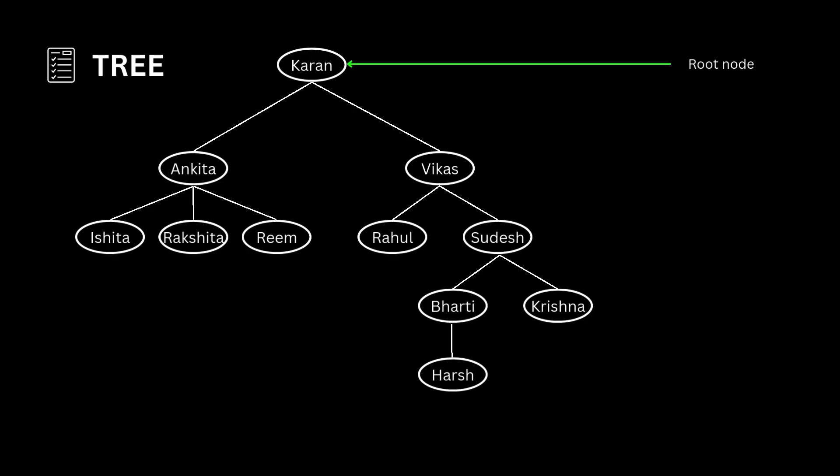In a tree data structure, the topmost node is called the root node. Each node holds some data which can be of any type. In the example tree shown here, the nodes contain employee names, so the data type would be a string. Each node contains data and a link or reference to other nodes which are called children.